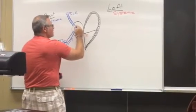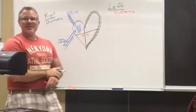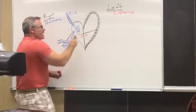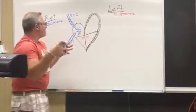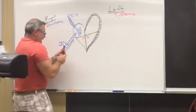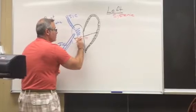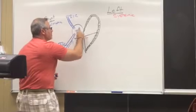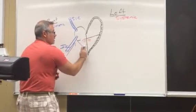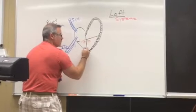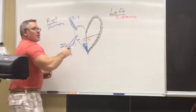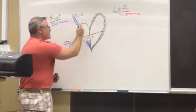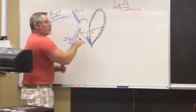Those red blood cells are no longer carrying oxygen as they flow into the right atrium — shown in blue because it's deoxygenated. As blood pools into the right atrium, the pressure builds until it becomes great enough to force the tricuspid valve open. All of that blood moves into the right ventricle. About 90% of it passively dumps into the ventricle; then the atrium contracts to push the rest.